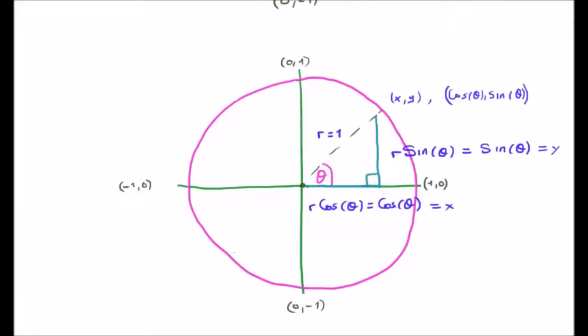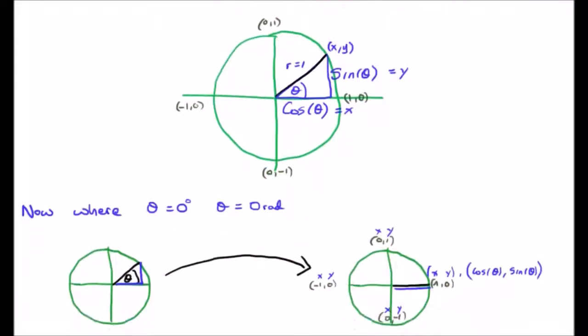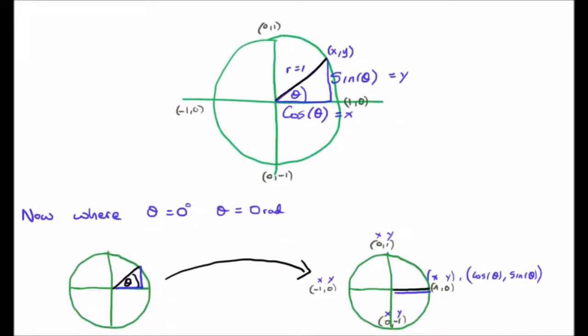Now it's time to start looking at the various angles on the unit circle and calculate their cosine and sine. Remember, any point is described by cos theta equals x and sine theta equals y, where the radius equals 1 — and that describes any point in the circle at any angle.